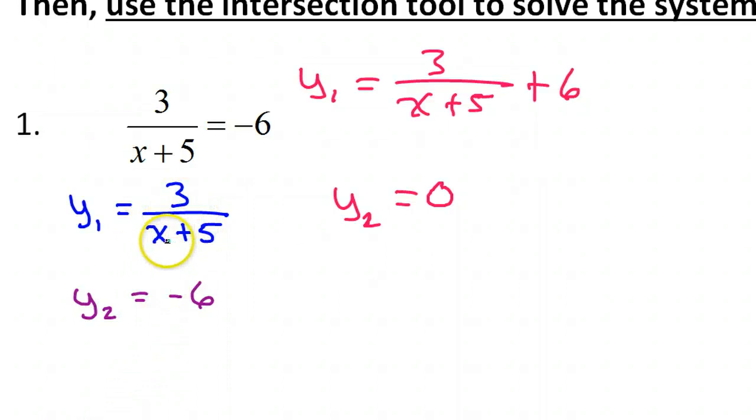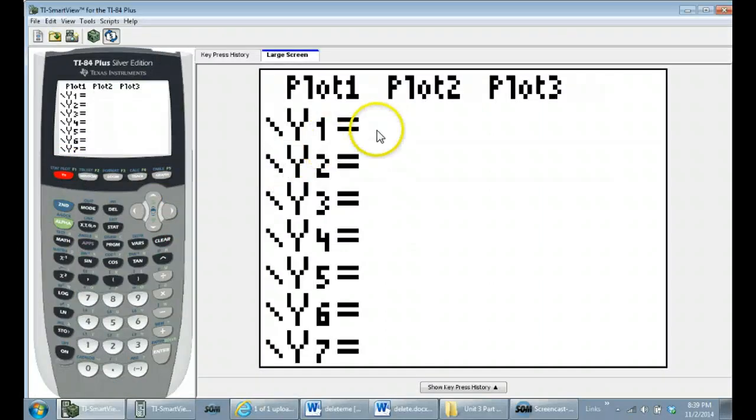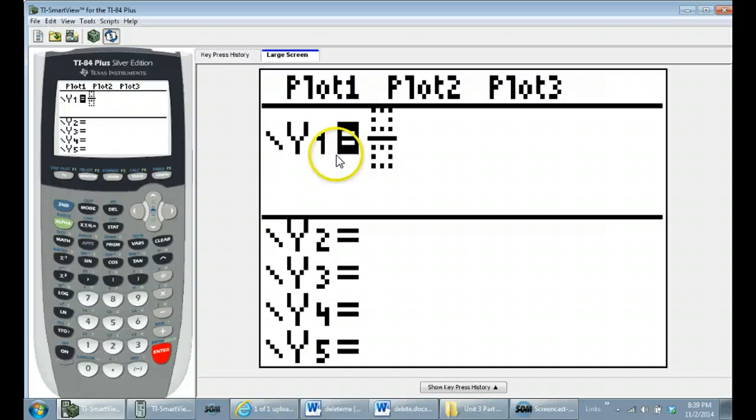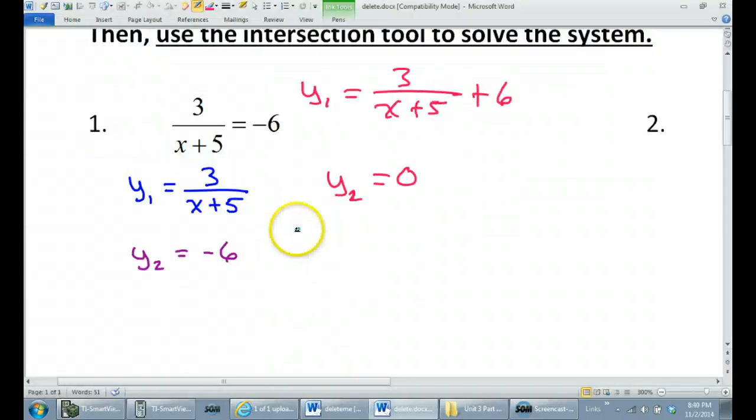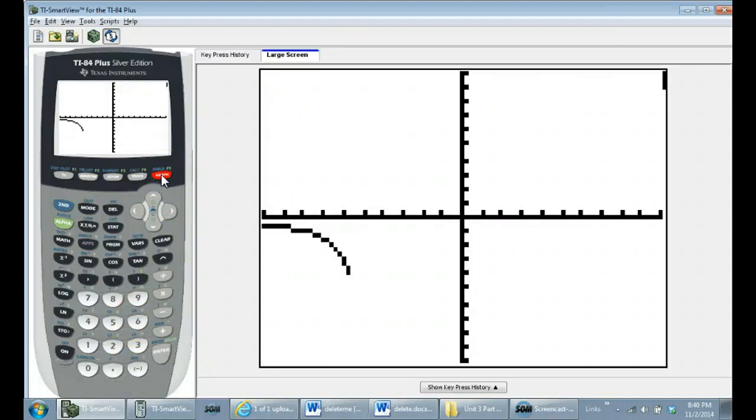So 3 over x plus 5. If I hit my y equals button, if I want to go into fraction mode, I can hit alpha y equals, and option number one, or I could just hit enter. Now, if your calculator doesn't have the latest update, then it might not do this, and you'll have to do it slightly differently. But update your calculator if you're not seeing this. Anyway, 3 over x plus 5. There's my first equation.